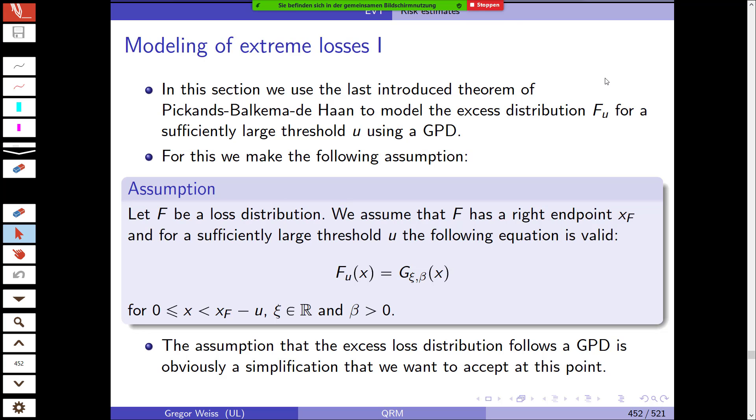Now we've seen two theories: first the block maximal method and second the threshold exceedances. Extreme value theory basically works like this: you're interested in extreme values of a distribution. In the block maximum method you split up your data sample into blocks and in each block you take the maximum. We then had statistical results showing that the distribution of these block maxima converges, if you increase the number of blocks, to a generalized extreme value distribution.